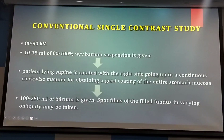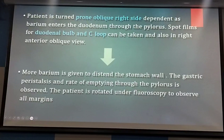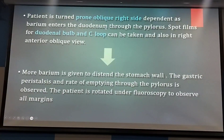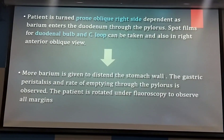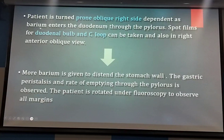100 to 250 ml of barium is given. Spot films from the field are taken with varying oblique positions. Then prone oblique, right side. Barium enters the duodenum through the pylorus. Prone oblique position opens up the pylorus, allowing barium to go into the duodenum. Spot films of the duodenum C-loop can be taken.